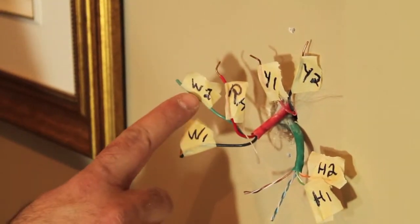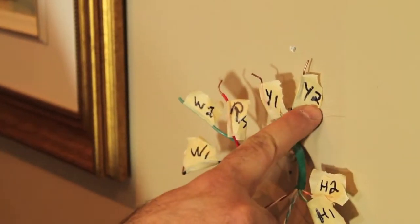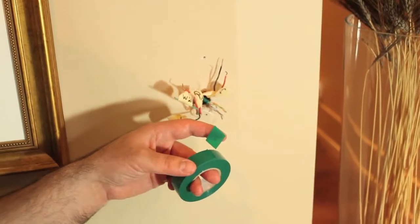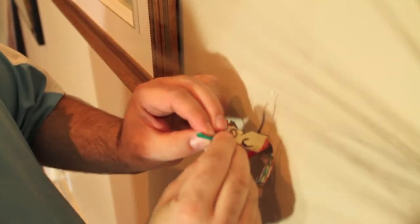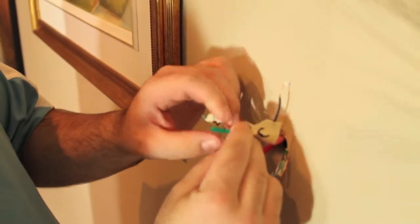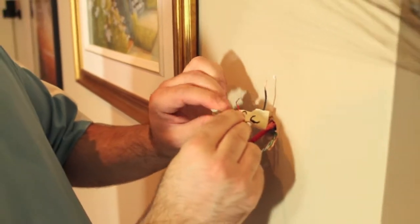Wires labeled W2 and Y2 are for two-stage heating and cooling and require a different model of thermostat. C is a power wire and it can be taped up as it won't be used for the new thermostat. If there's an extra wire not connected to your old thermostat you will also not need it for the new thermostat.